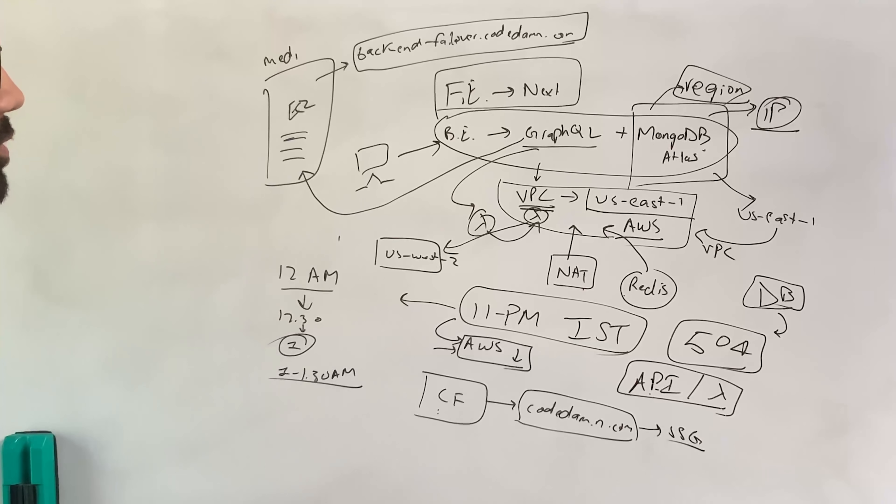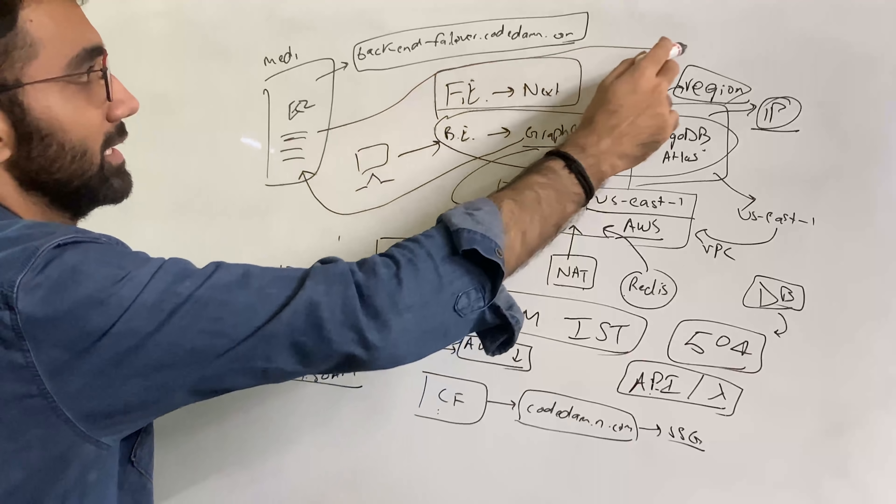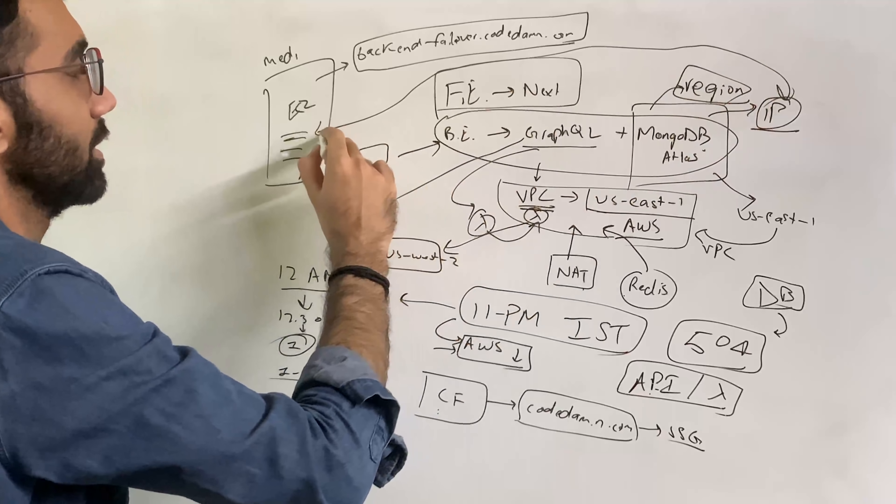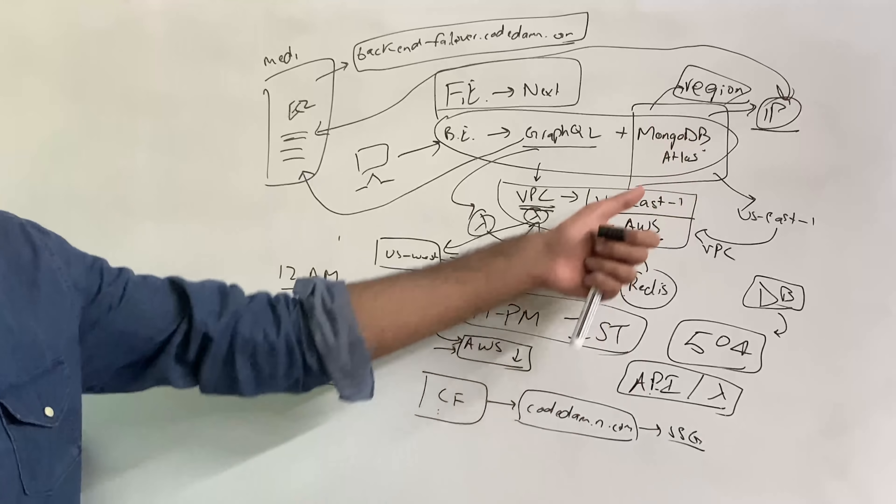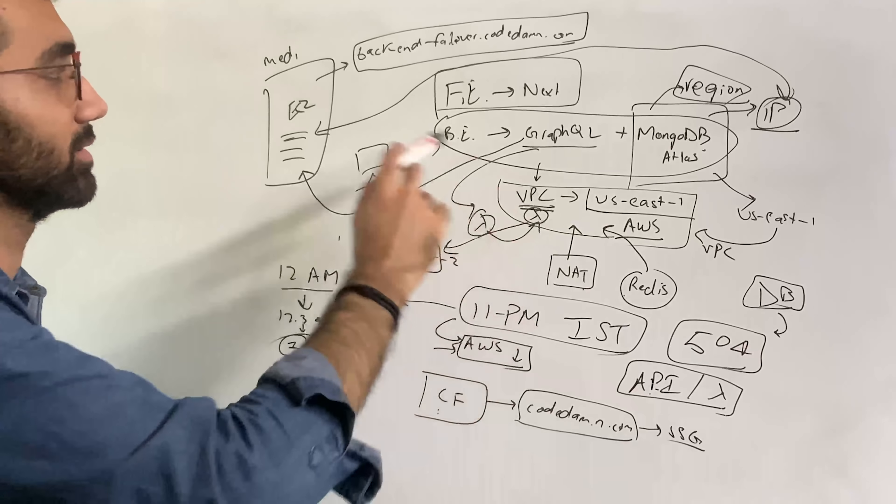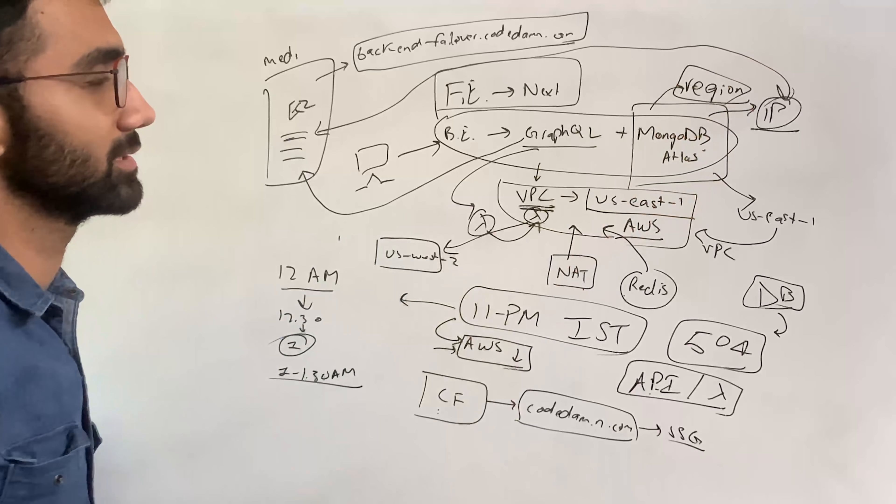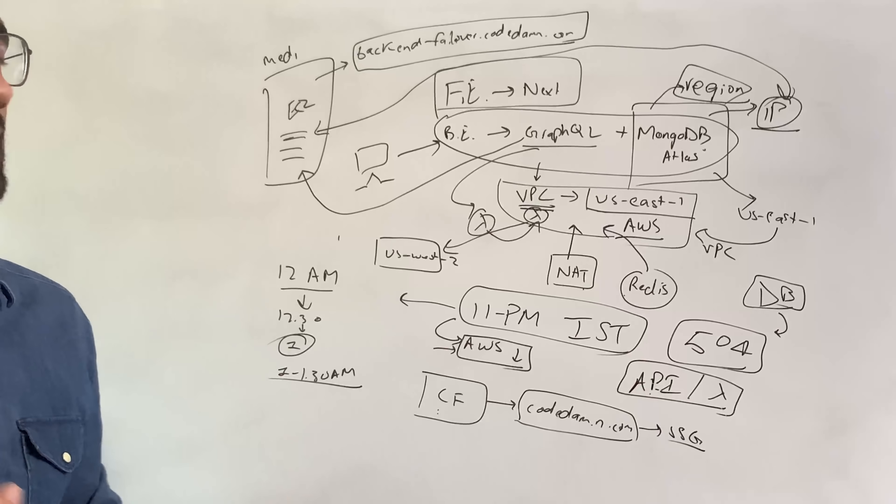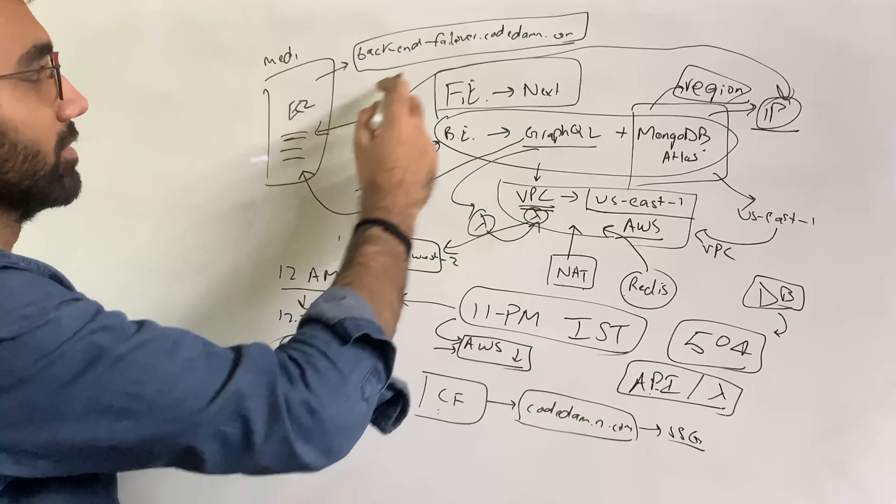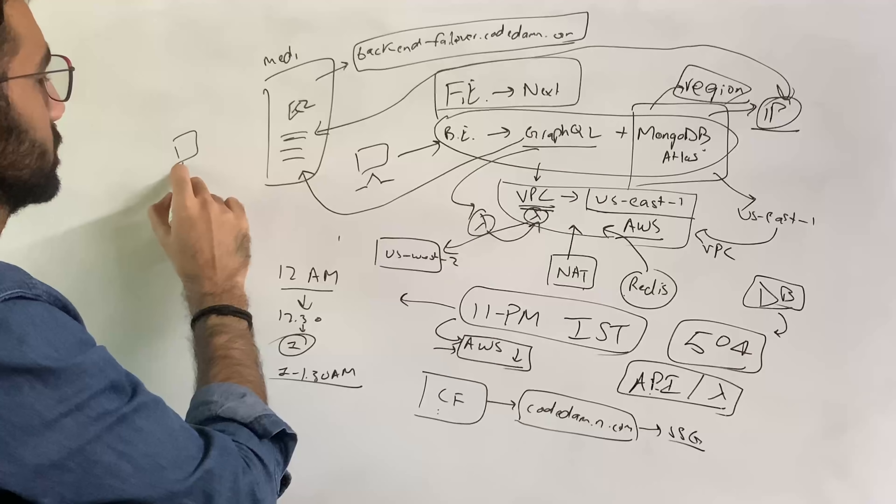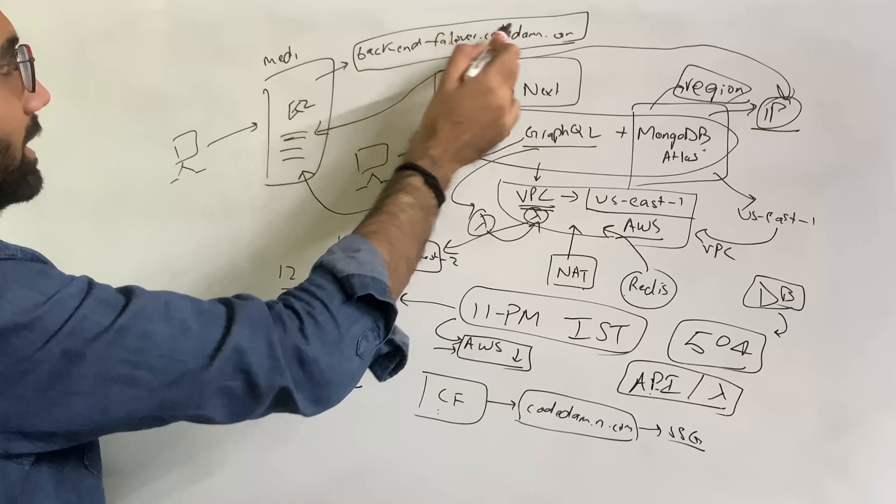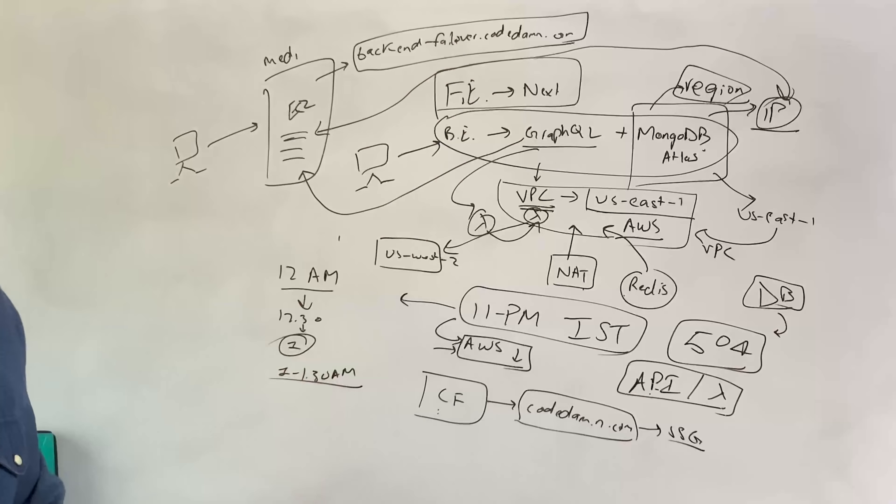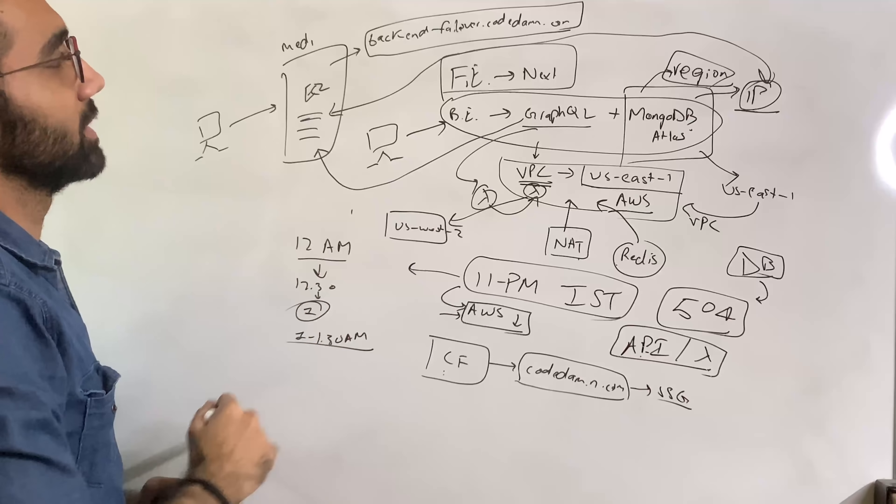And connect it with backend-failover.codedam.com. Of course this is not ideal, but this would get the job done. Now the only thing we have to do was this connection, because Atlas gives you the option to whitelist an IP address so that particular instance can access your Atlas database even outside the VPC. And everything seems like it's good until AWS figures out this stuff.